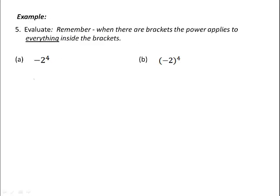One of the most important things to consider when numbers are raised to powers is whether there are brackets. If there are brackets, the power applies to everything inside the bracket. Whereas if there are no brackets, the power only applies to the number or pronumeral directly before it. So to evaluate minus 2 to the power of 4 with no brackets, the power of 4 applies to the 2, so we write the negative first and then 2 times by itself 4 times — giving negative 16. With brackets, the 4 applies to the negative 2, so it is negative 2 times by itself 4 times, giving positive 16.